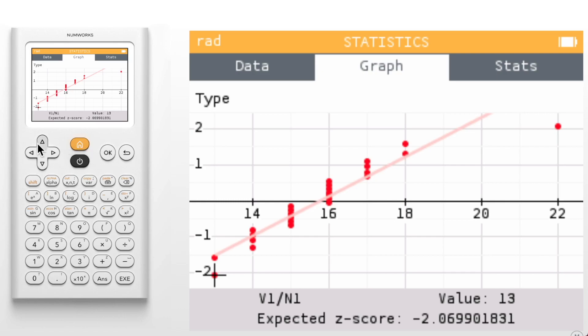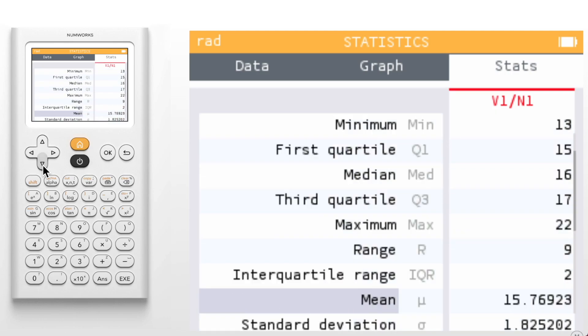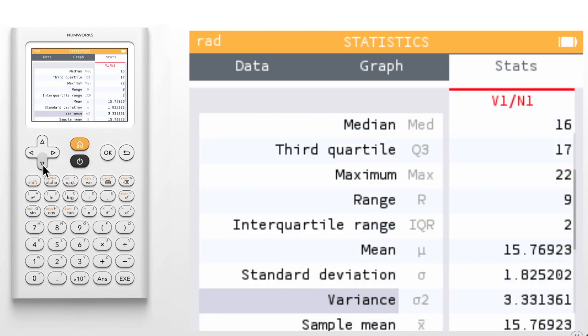We'll now take a quick look at the stats tab. You may notice that the list of summary statistics has been reordered. We now start with the five number summary and then include the mean, standard deviation, and variance for both the population and the sample.